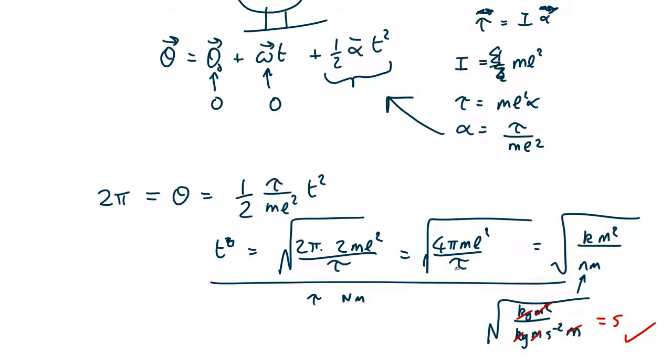Check on functional form. Limiting cases. If there's no torque then the time is infinity, 1 over 0, which makes sense. If they weighed an infinite amount then it would take an infinitely long time. So that's all making sense. So this is a plausible answer.